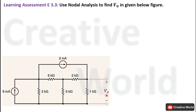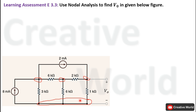While solving a problem with Nodal Analysis, we have to follow some steps. The first step is to find the number of nodes in the network. In this case, there are four nodes present in the network, and these nodes are highlighted. One node out of these four will be treated as the reference or ground node.